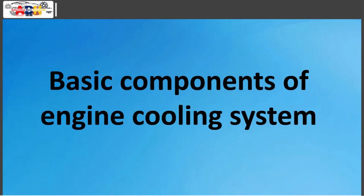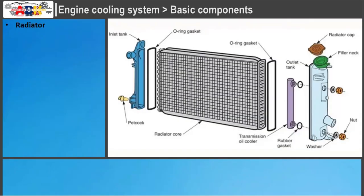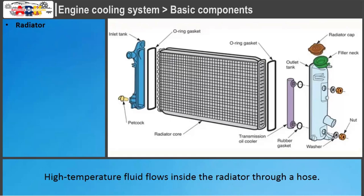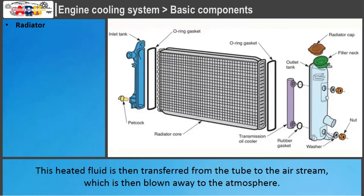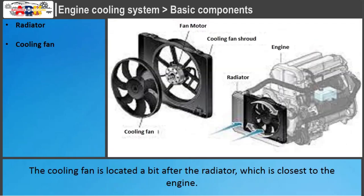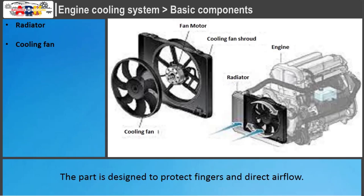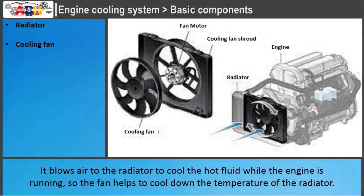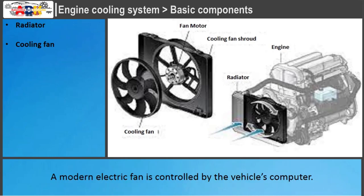Basic components of engine cooling system. Radiator: High temperature fluid flows inside the radiator through a hose. This heated fluid is transferred from the tube to the airstream, which is blown away to the atmosphere. Cooling fan: The cooling fan is located after the radiator, closest to the engine. It blows air to the radiator to cool the hot fluid while the engine is running, helping to cool down the radiator temperature. A modern electric fan is controlled by the vehicle's computer.